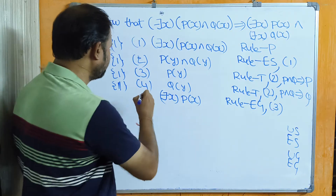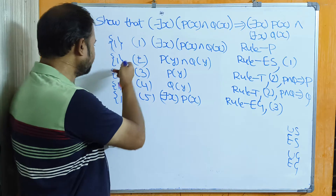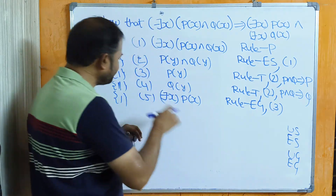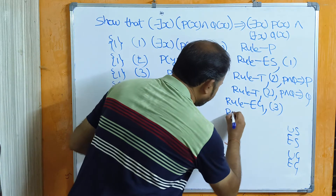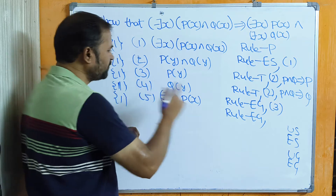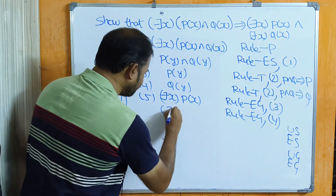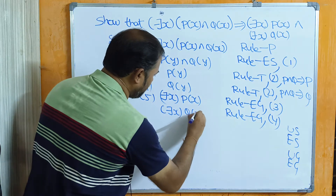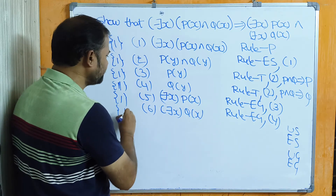Next, likewise we add the existential quantifier to Q(y) by applying Rule EG on statement formula number 4. We replace y with x to get ∃xQ(x) as statement formula number 6, from premise 1.